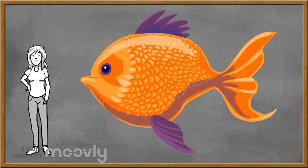A fish lives in the water, it is orange, it can swim and it has fins.